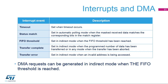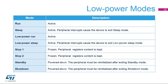The OctoSPI has five interrupt sources: time out; status match, when the masked received data matches the corresponding bits in the match register in automatic polling mode; FIFO threshold; transfer complete; and transfer error. DMA requests can be generated in indirect mode when the FIFO threshold has been reached.